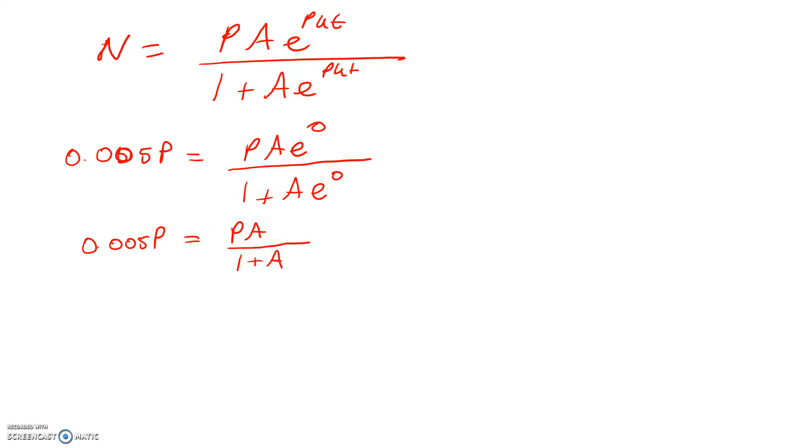Rearranging, I get 1 plus A times that is PA. We're going to collect up all of the terms with A on the right-hand side. We're going to have A times P minus 0.005P, so we're going to end up with 0.005P equals 0.995P times A.